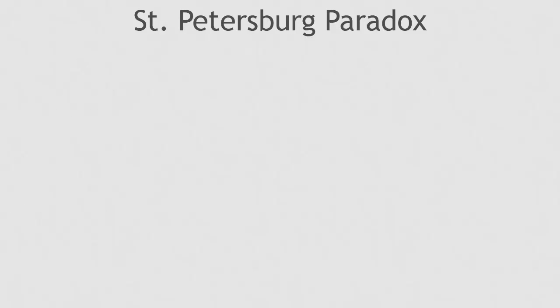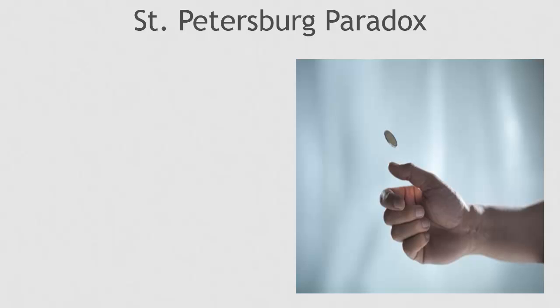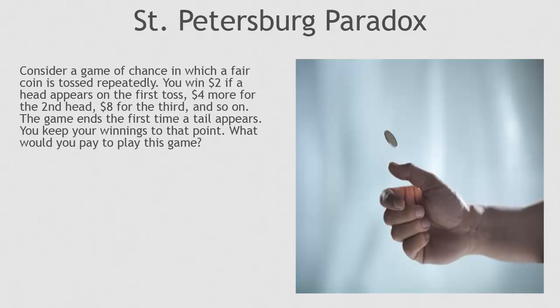Daniel Bernoulli helped illustrate the shortcomings of the expected value approach with his St. Petersburg paradox. Imagine a game of chance in which a fair coin is tossed repeatedly. You win $2 if a head appears on the first toss, $4 more if a head appears on the second toss, $8 more for a head on the third toss, and so on. The game ends the first time a tail appears. You keep your winnings to that point. What would you pay to play this game?